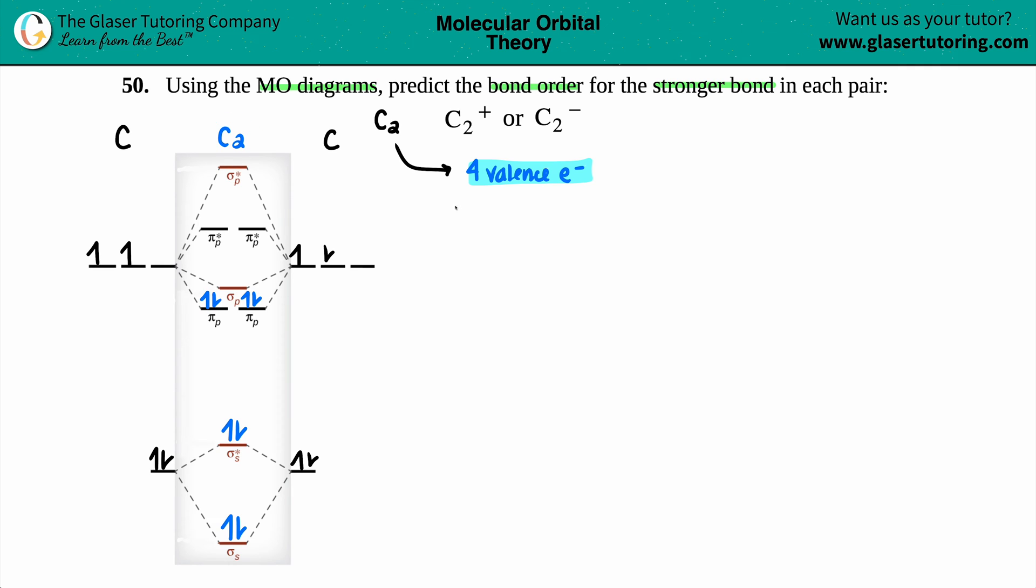Now keep in mind that this is for C2. So let's work on C2 plus. Now C2 plus, keep in mind that this is a plus one. This means that you lost one electron. It doesn't really matter which carbon you lose the electron from, whether it's the left or the right side. Maybe I'll just lose it from the left side, but that means that you have to lose it from the highest energy orbital as well. So as you add them on, you will now take them away. I'll take the last electron that I added.